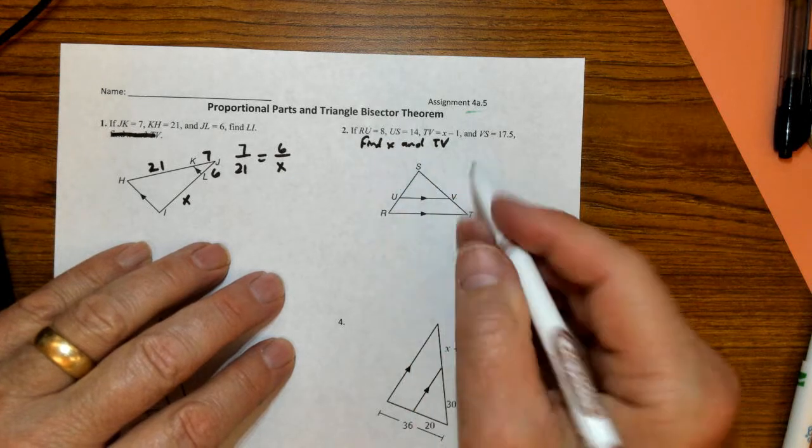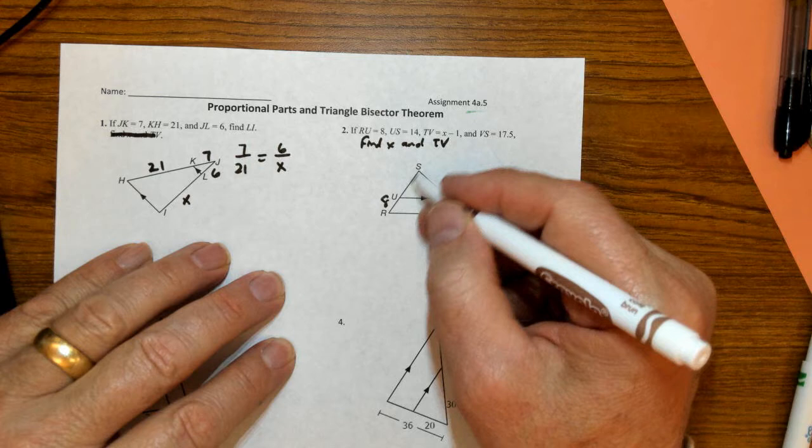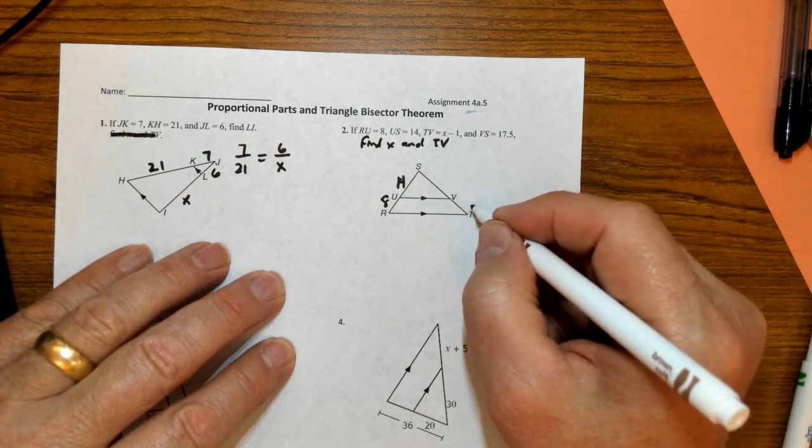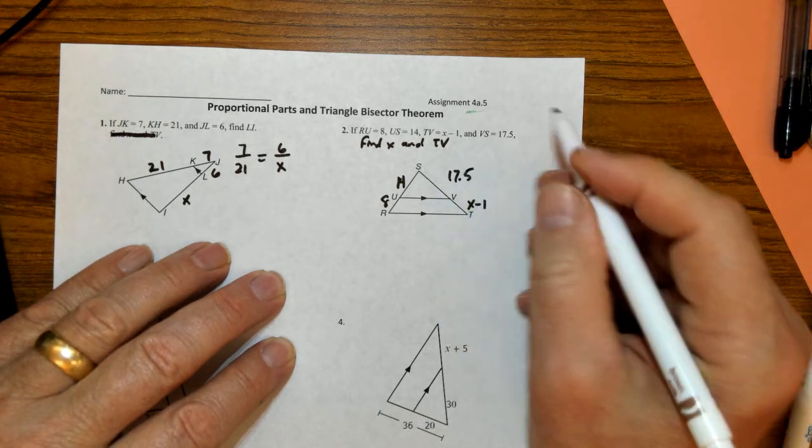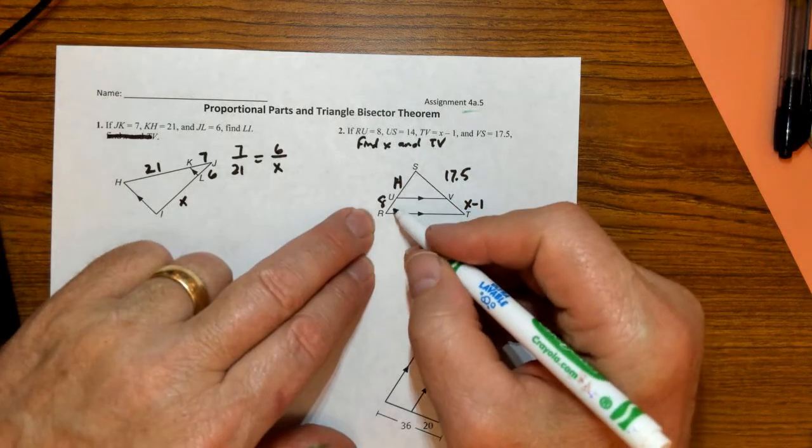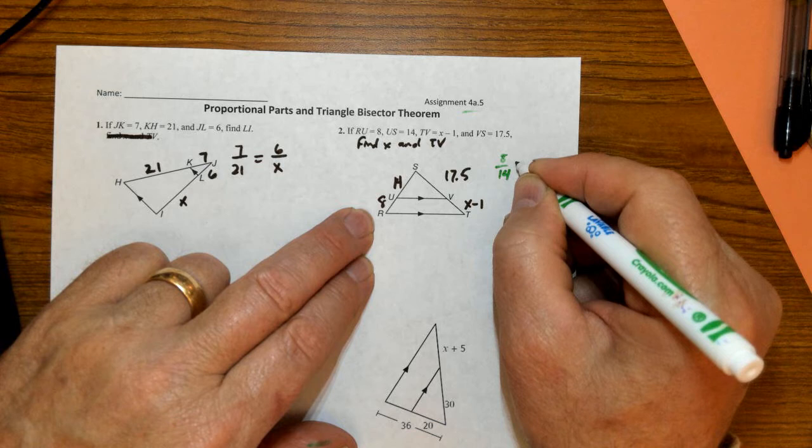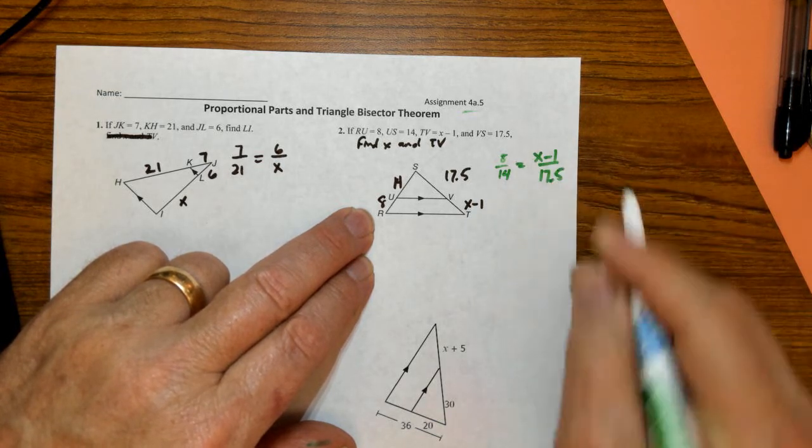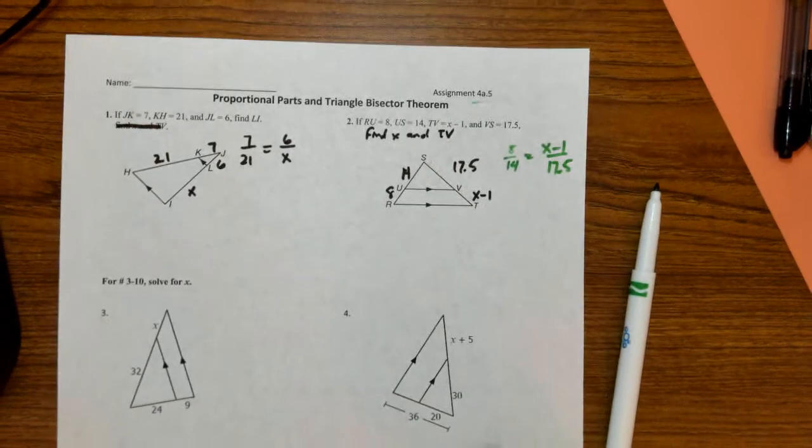This one, RU is 8. US is 14. TV right down here is X minus 1. And VS is 17.5. So now I know my proportion is 8 is to 14 as X minus 1 is to 17.5. Do the cross product and solve for X.